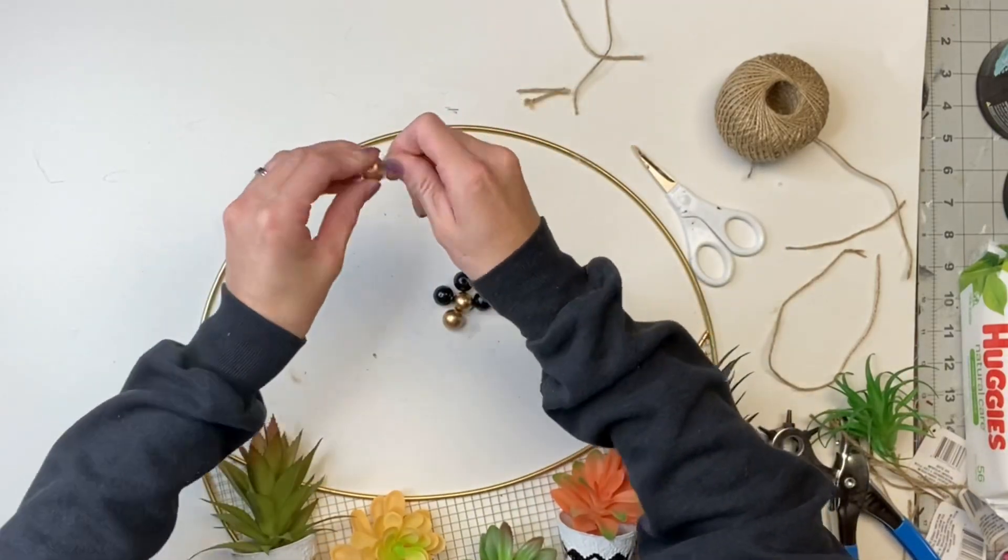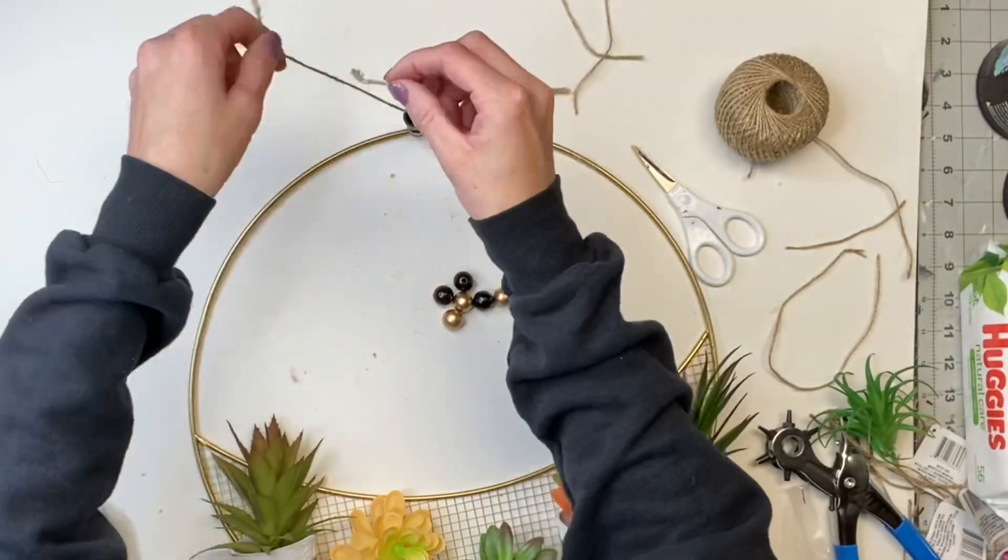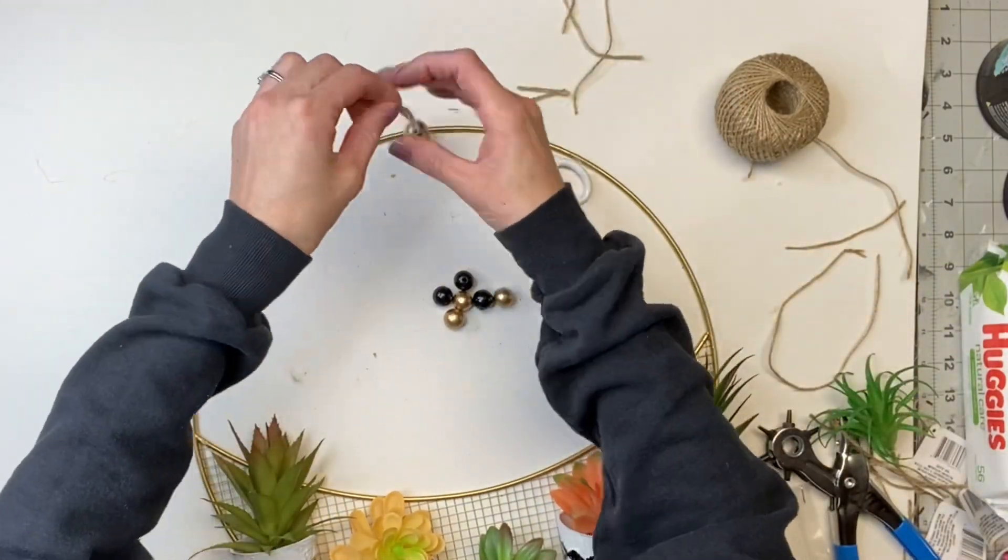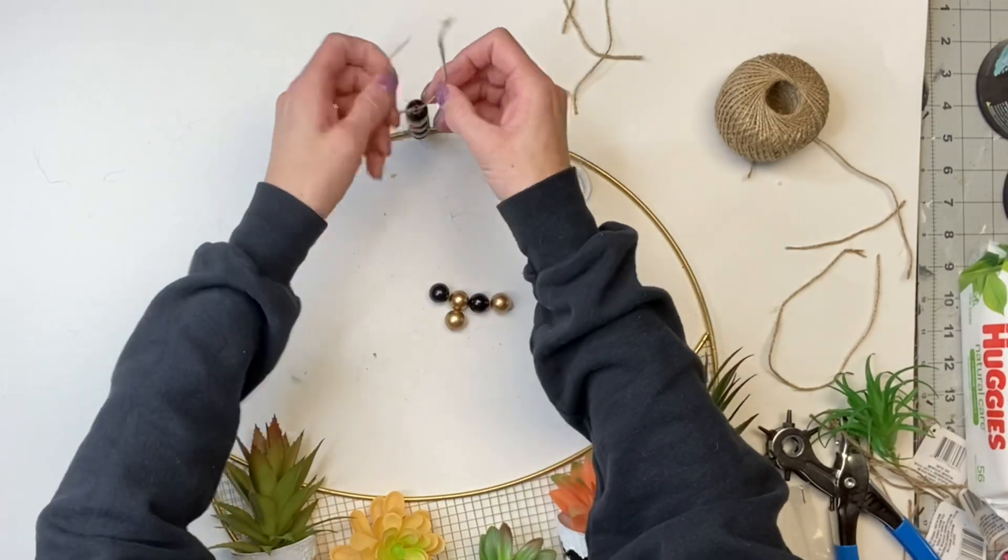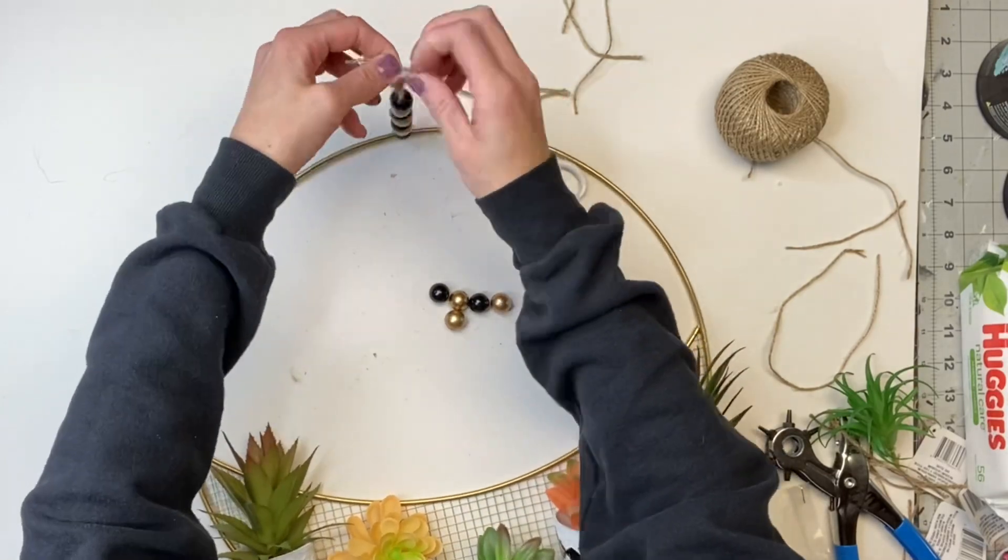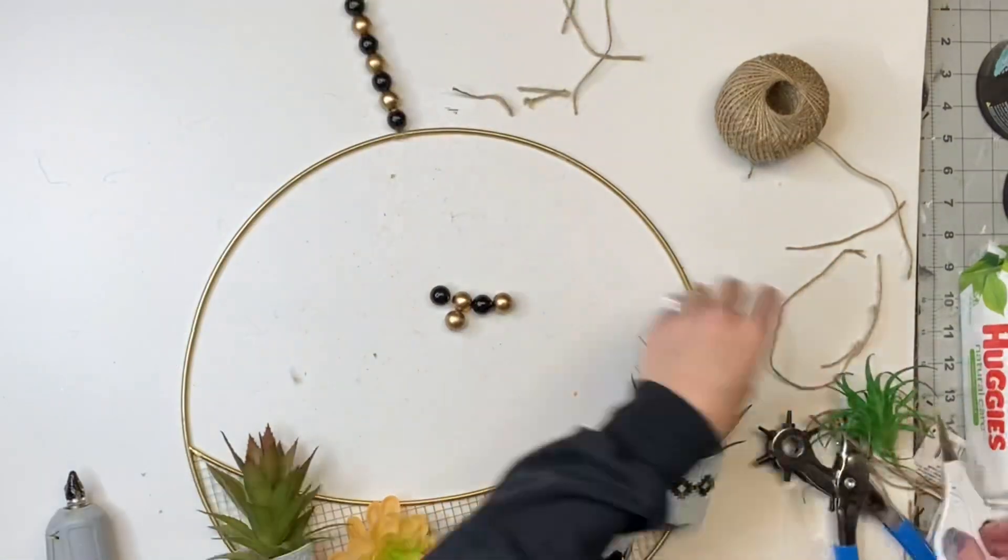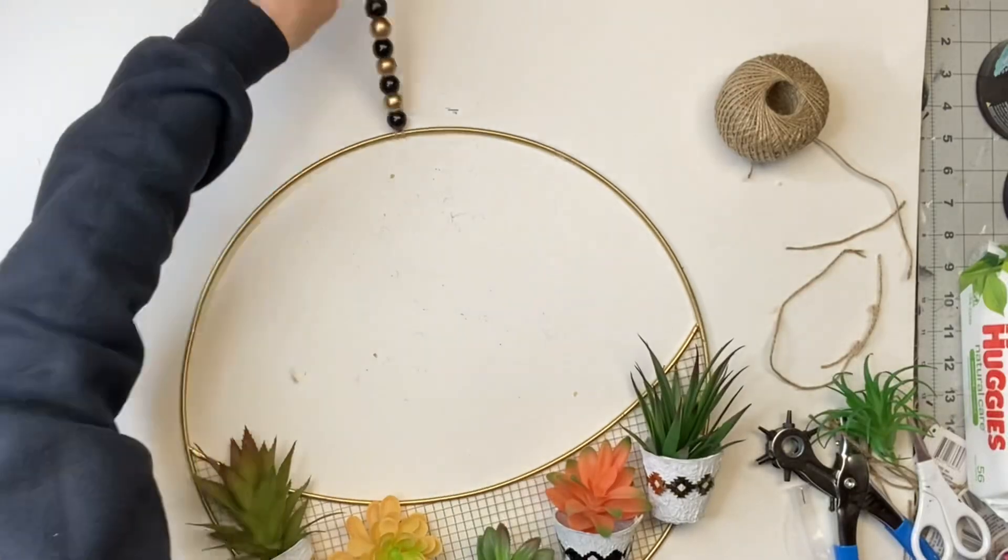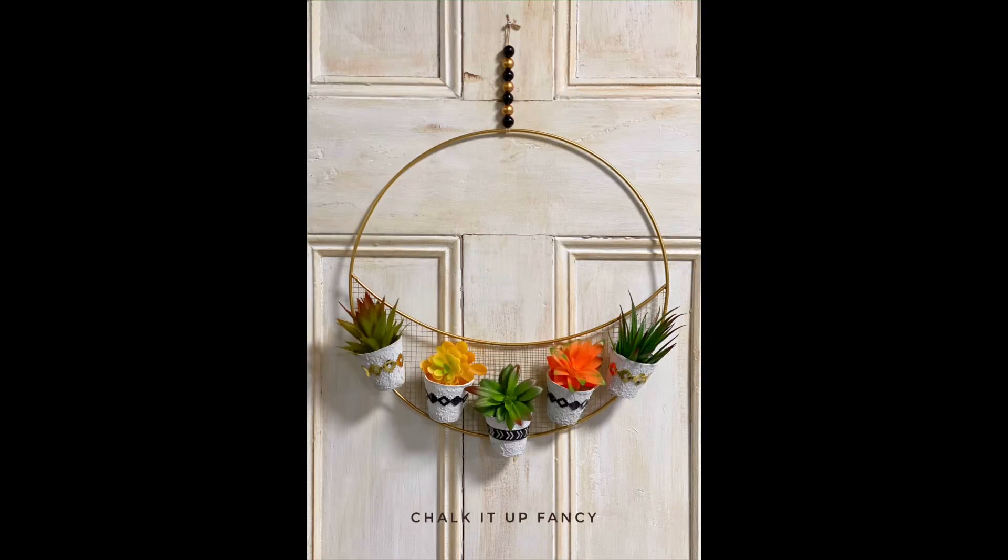And I'm just going to string them onto the jute here. And this is going to be my hanger. And there we go. Now we have this really fun succulent wall hanging.